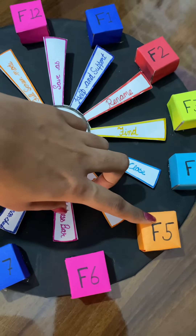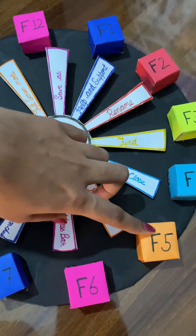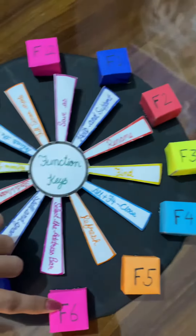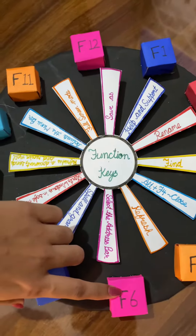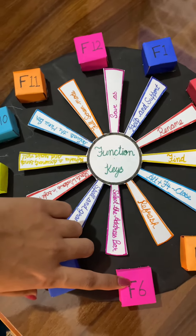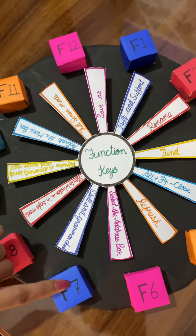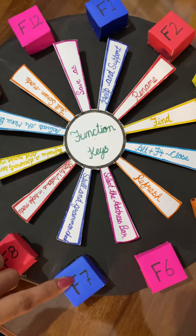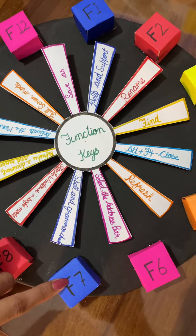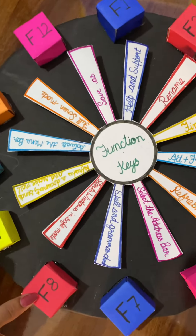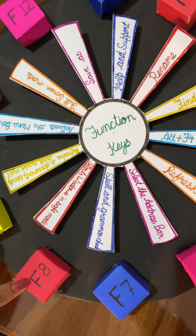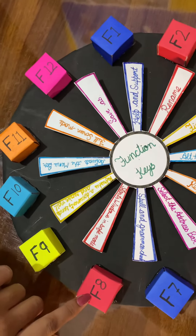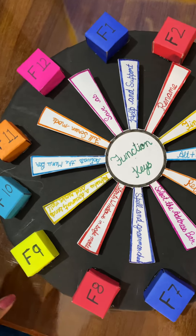F5: The F5 key is used to refresh. F6: The F6 key is used to select the address bar. F7: The F7 key is used for spell and grammar check. F8: The F8 key is used to start Windows in safe mode.